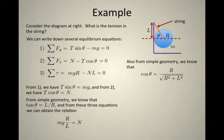And again from geometry, we know that the cosine of the angle is going to equal the opposite over the hypotenuse, so that's R over the square root of R² plus L².